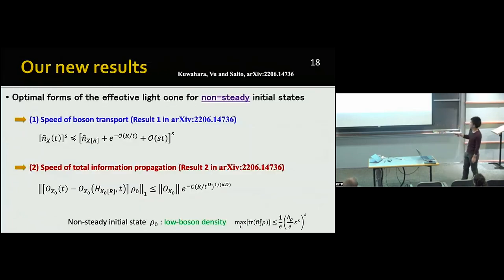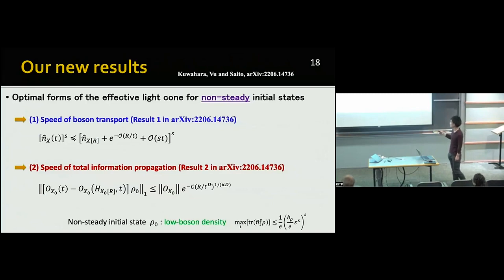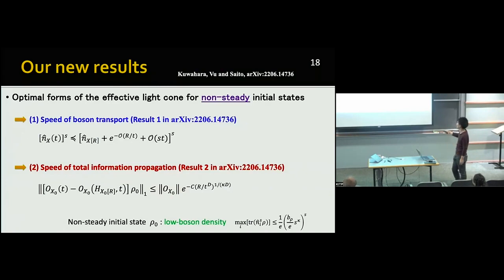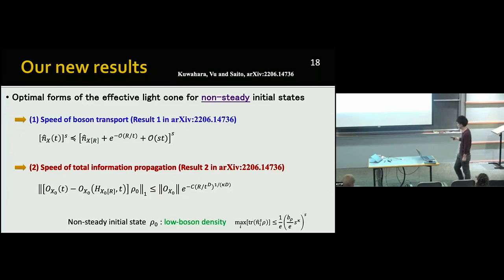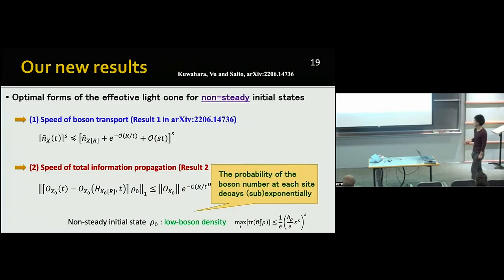Our new result is given by two operator inequalities. The first is the speed of boson transport — we generally derive this operator inequality. From this, if the capital R (the distance) is much larger than the time t, this operator inequality is essentially given by the moment function of the boson number operators in the extended region. The second gives the speed of total information propagation, and the Lieb-Robinson bound is given accordingly. We assume the initial states satisfy the low boson density condition, which roughly implies the probability of the boson number at each site decays sub-exponentially.